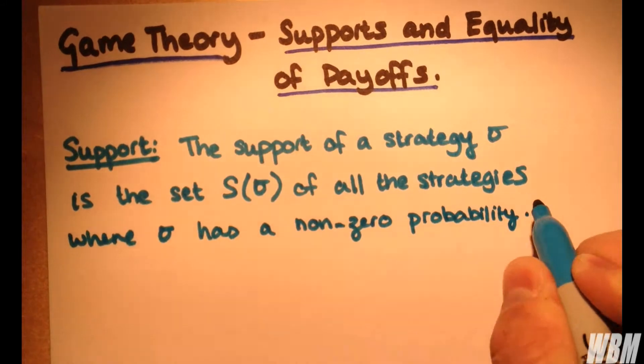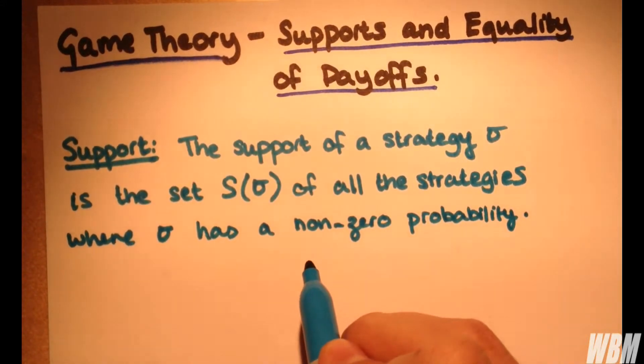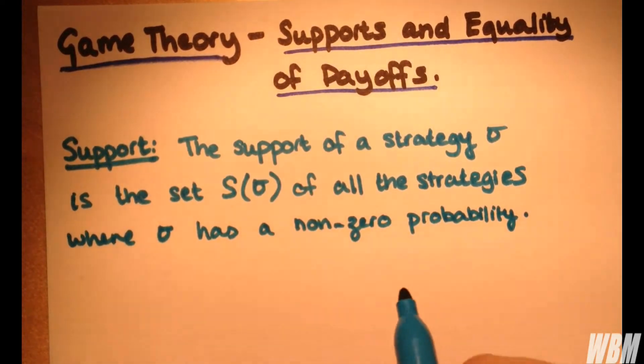So basically, when we consider a support, we only take into account the probable decisions, so anything that you can actually choose. It's quite straightforward.